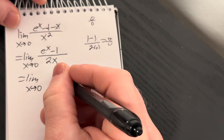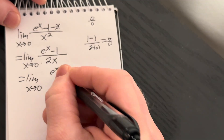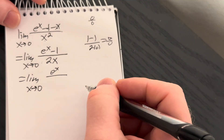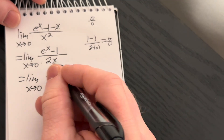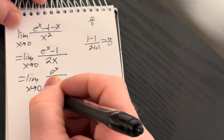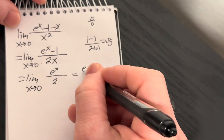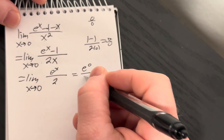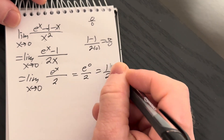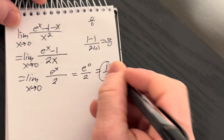The derivative of e to the x is e to the x. The derivative of negative 1 is 0, so that vanishes. The derivative of 2x is 2. And now we can just plug in 0 and get a nice answer.